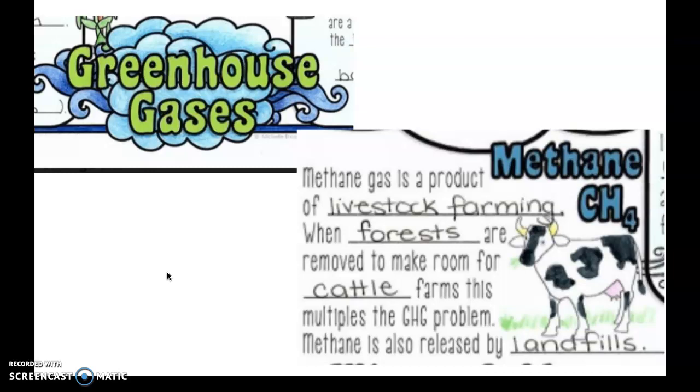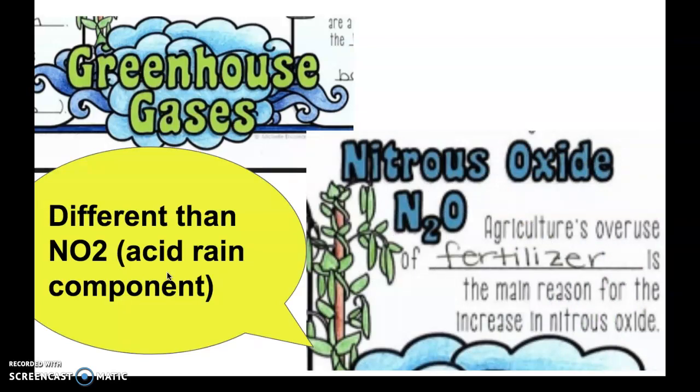The next one we talked about is cow farts, or methane, CH4. Methane gas is a product of livestock farming—it's not just cows, it's chickens, pigs, anything else that you farm on a huge industrial farm, like huge slaughterhouses. When forests are removed to make room for the cattle farms, this multiplies the greenhouse gas problem because we're taking away the trees, the natural filters of atmospheric carbon dioxide. Methane is also produced in landfills. As we generate more trash, we are increasing the amount of methane released. Methane is released when trash and garbage decomposes.